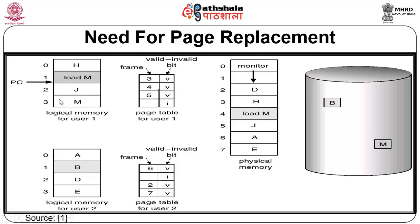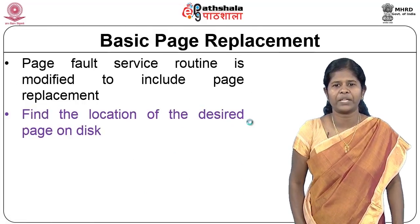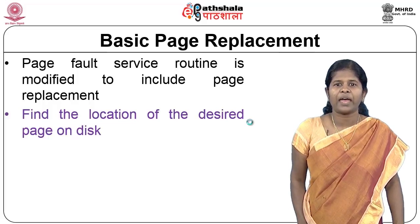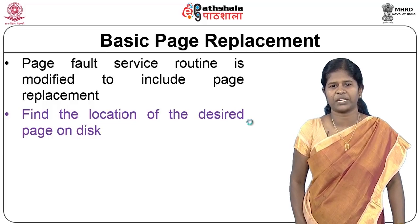If there is suddenly a reference to page M of User1, the OS looks at the page table, finds the invalid bit set, checks secondary storage, finds the page there, and tries to bring it into physical memory. But there is no free frame, so page replacement is needed — some page in physical memory must be moved out to make room for page M.